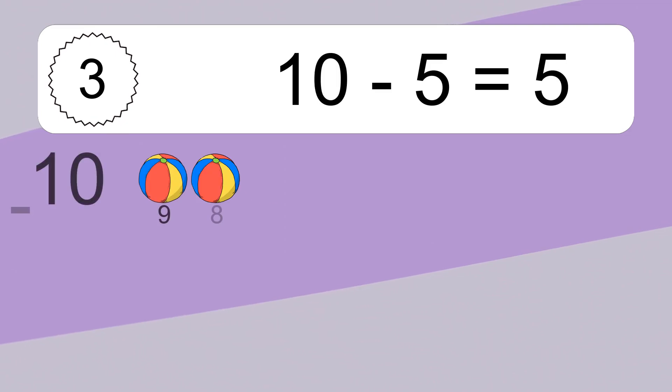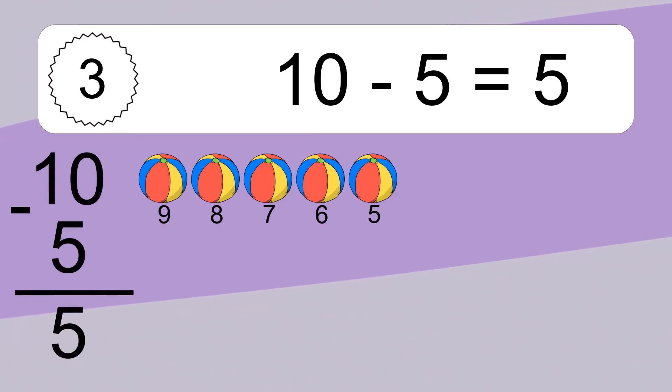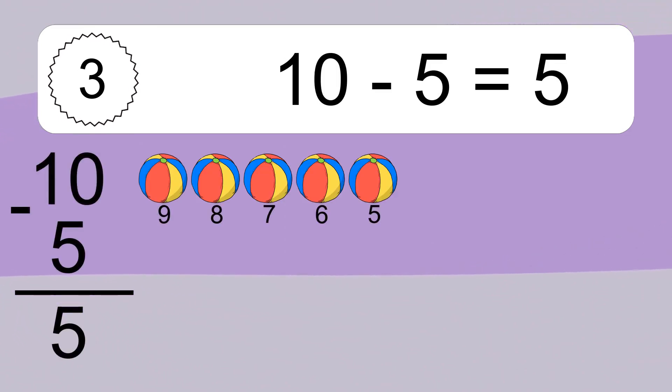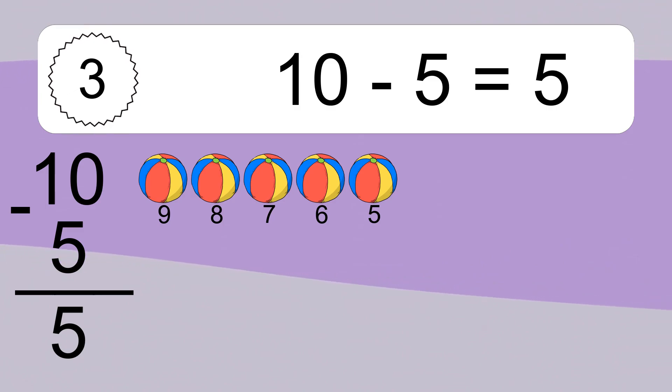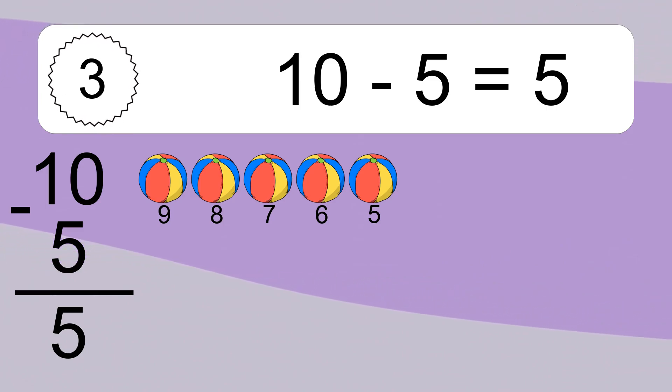10 minus 5 equals 5. Let's count it. 9, 8, 7, 6, 5. 10 minus 5 equals 5.